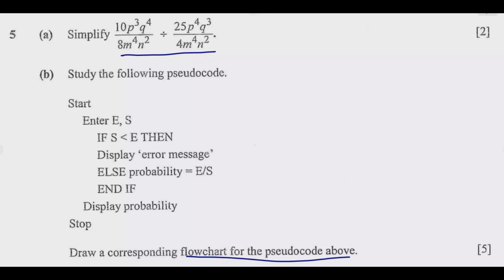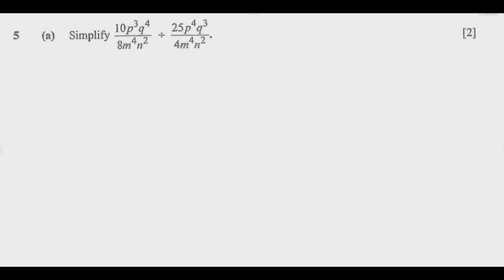Let me go step by step. So start with part a. The tricky part is dealing with this division. What you need to do is obtain p to the power 3, q to the power 4 over 8m to the power 4, n squared, then multiply. To multiply, we need to swap this denominator and numerator. So we're going to have 4m to the power 4, n squared divided by 25p to the power 4, q to the power 3. Then it becomes easier.